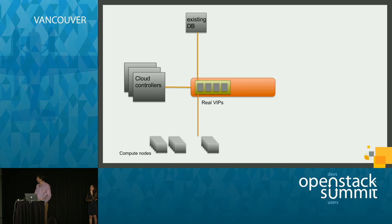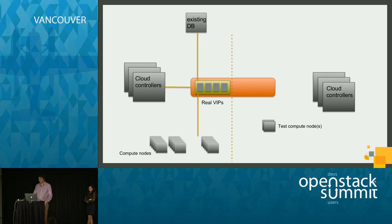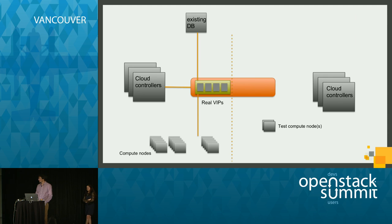We start with a simplified diagram: compute nodes, three cloud controllers, a database, and a load balancer in the middle. The first step of the upgrade was to build new cloud controllers — we're using an all-virtualized control plane, so this step was actually very quick. The second step was to find a test compute node. In our case, it was easier to just pick one of the existing compute nodes, disable it in Nova Manage, and move it over to the new side for testing. That compute node had some VMs that we could afford to experiment with.